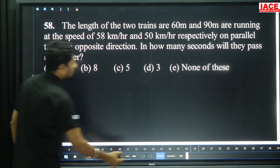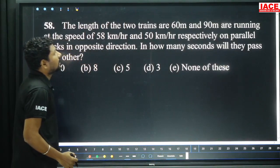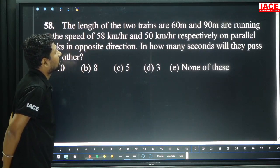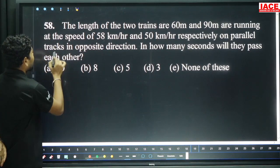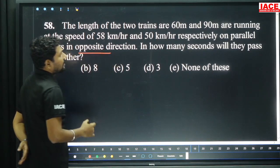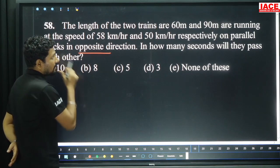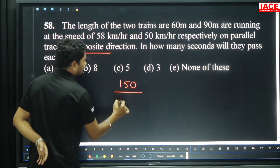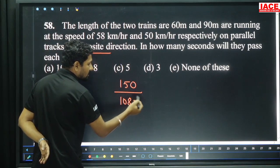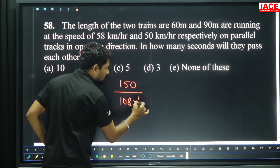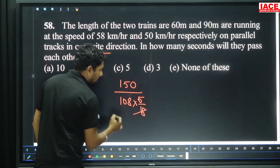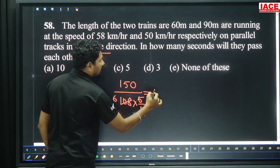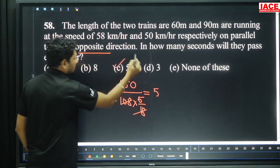Next: Two trains of length 60 meters and 90 meters running at speeds of 58 km/h and 50 km/h respectively on parallel tracks in opposite directions. How many seconds will they take to pass each other? Total length is 150 by total speed 108 km/h. Convert to m/s by multiplying 5 by 18. 18 into 108 is 6 times — speed is 30 m/s. 30 to 150 is 5 times, so 5 seconds, option C.